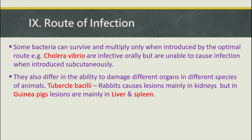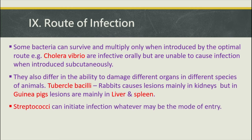There are certain exceptions. Some bacterial species like Streptococcus can initiate infection whatever may be the mode of entry. For example, Streptococcus pyogenes causing wound infection can result in septicemia. Unlike Vibrio cholerae, which requires the oral route, Streptococci can establish infection by any route of entry.